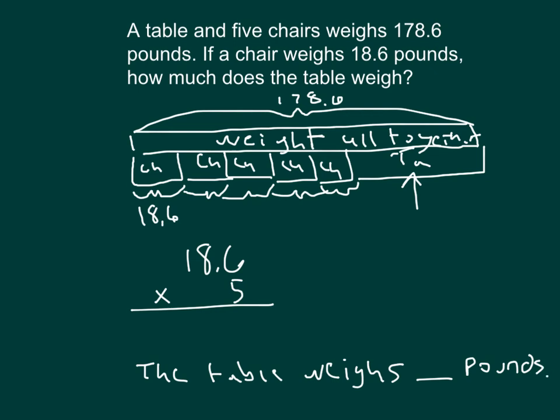So let's start with that figuring out of how much all of those chairs weigh all together. Remember, there's five of them. Each of them weighing 18.6. So, five times six is 30. Zero, regroup a three. Five times eight is 40. Plus three is 43. Three, regroup a four. Four, and five times one is five. Plus four is nine. We had 18.6. So this is 93. And this is the total amount of weight for all of those chairs put together.